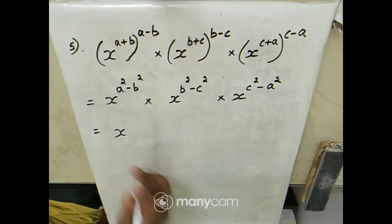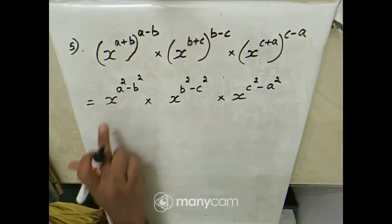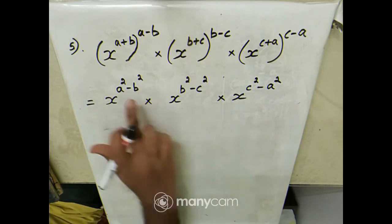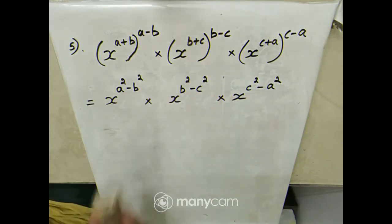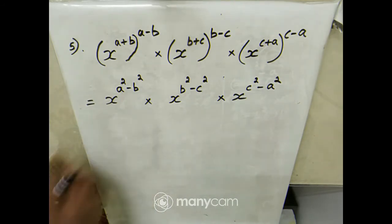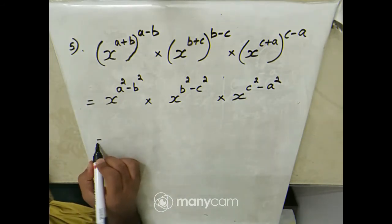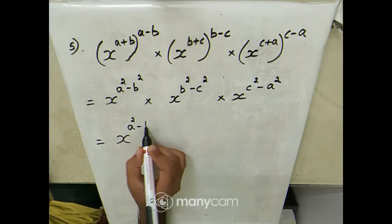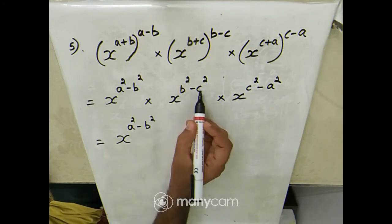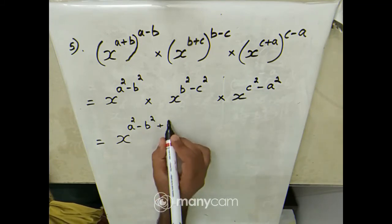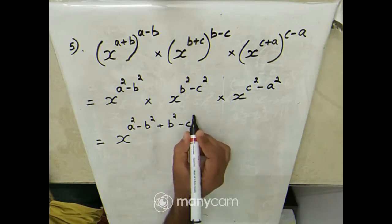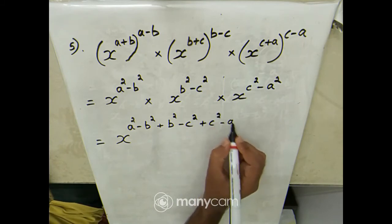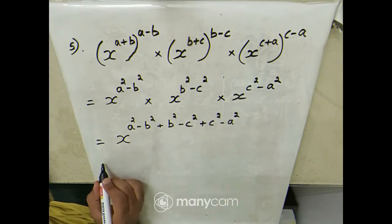The base is the same — x — in all three terms, and they are multiplied, so we can add the exponents. This is one of the laws of exponents. So this equals x power (a²-b²) + (b²-c²) + (c²-a²).